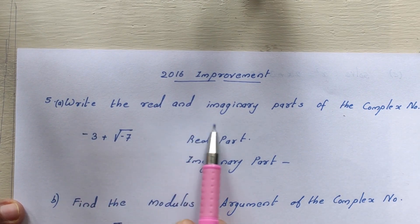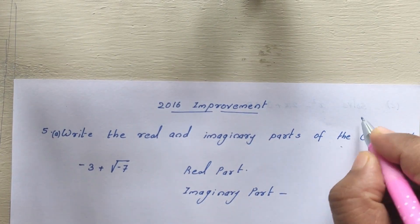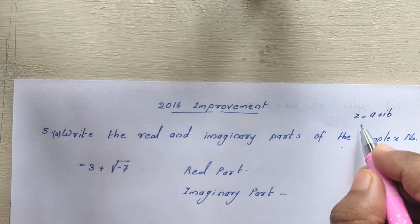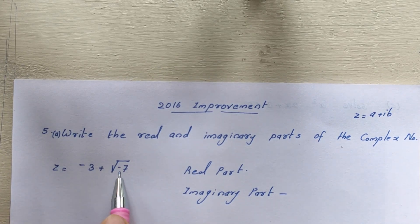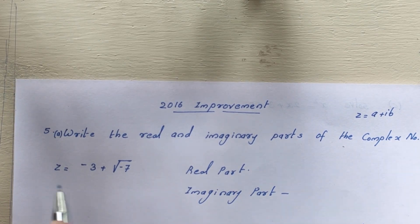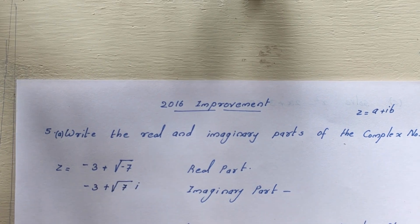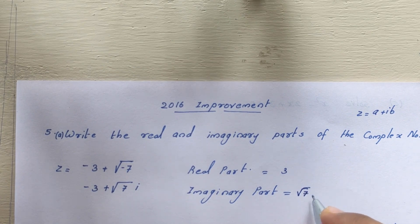The first question is: write the real and imaginary part of the complex number. This is the complex number in the form of a plus ib. This is the real part and this is the imaginary part.